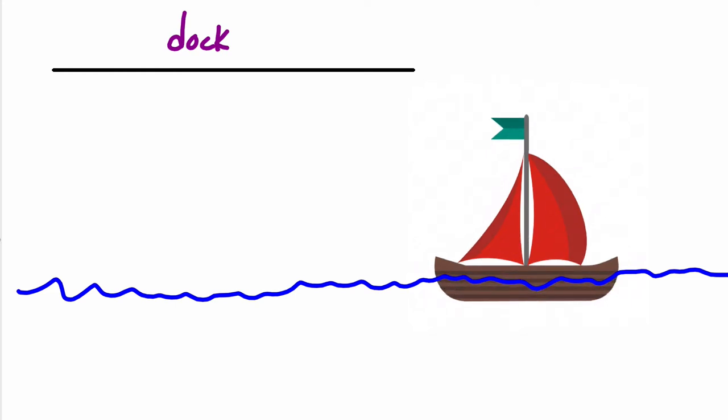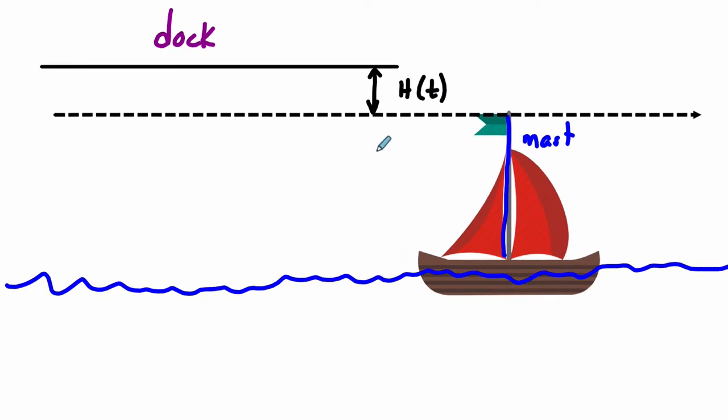And what we're tracking as it goes up and down is the height of the mast. Now the mast is this thing right here. This is the mast. And we're looking at its height relative to the dock. So that just means if I imagine this horizontal line right here, at any point in time, there's height of the mast as it moves up and down. And we're saying, well, how does that compare to the height of the dock? So we're looking at this distance right here, the height of the mast relative to the dock as a function of time.